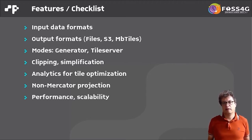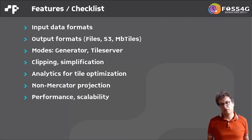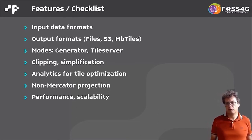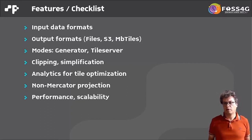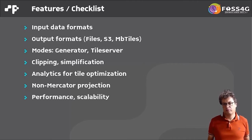Other criteria include how it handles clipping and simplification, and what kind of analytics are available for optimizing output tiles — such as how big are the tiles and how many features are in certain tiles. Another feature of interest is what projections are supported; usually it's Mercator but for some cases other projections are needed. Performance and scalability are also considered.